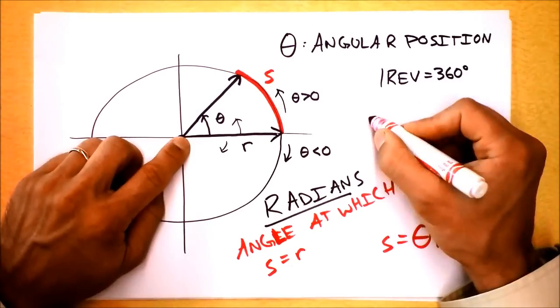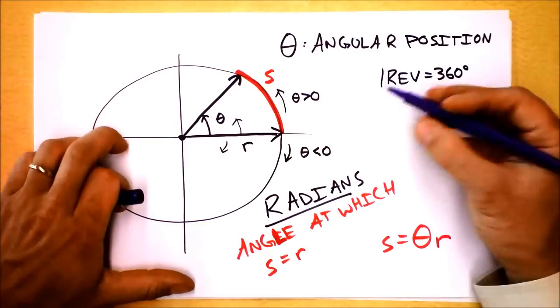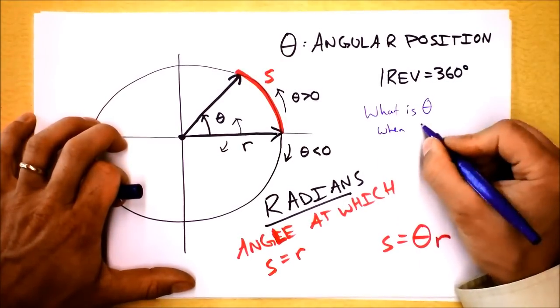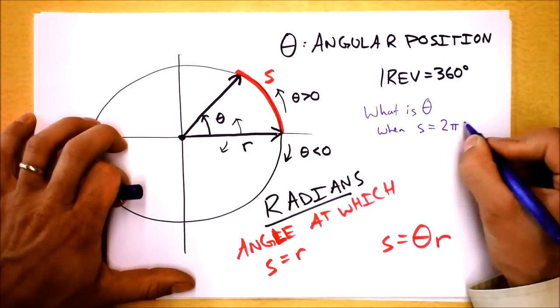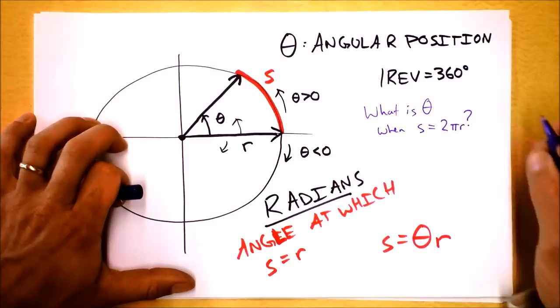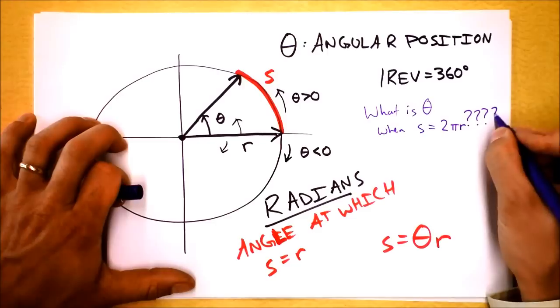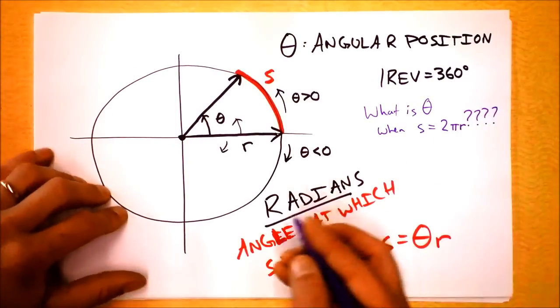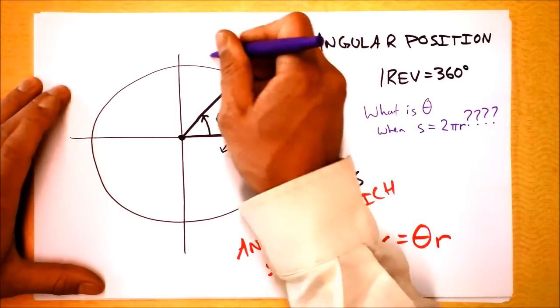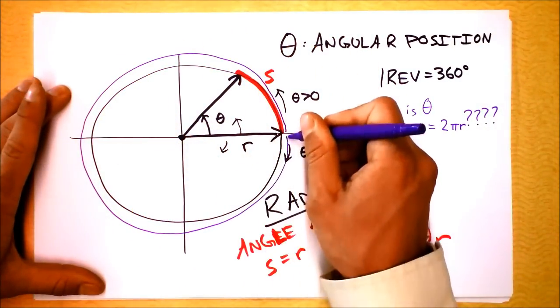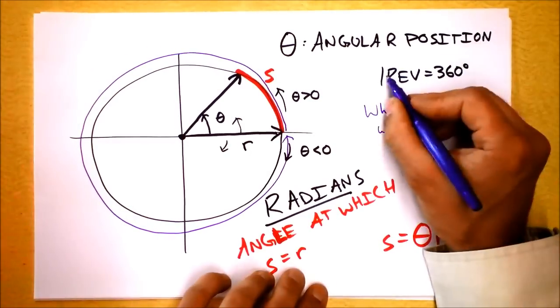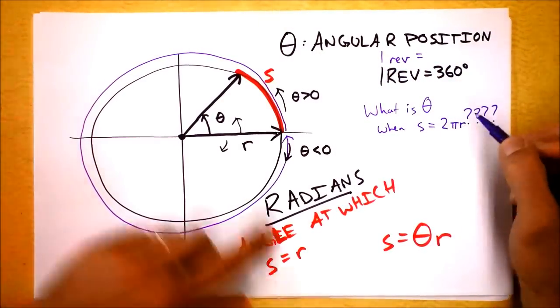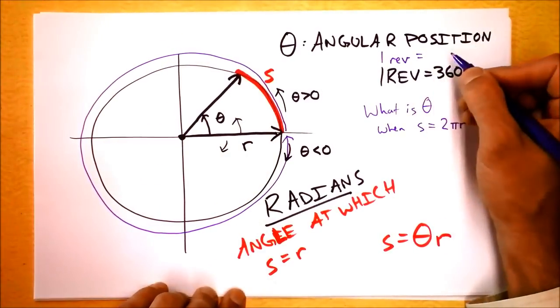Here's a question for you. What is, I'll put this in purple, this tricky question. What is theta when s equals two pi r? Do you guys know what two pi r is? Two pi r? The circumference. That's all the way around the circle. So when s has gone like this, how many radians have we gotten? And that's going to give us another definition of one revolution. When we find that number, the number of radians that we need to go all the way around the circle, that will be one revolution. Let's check this out.